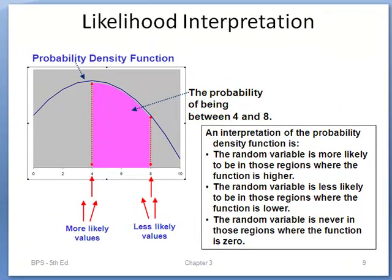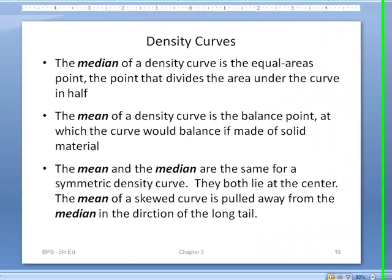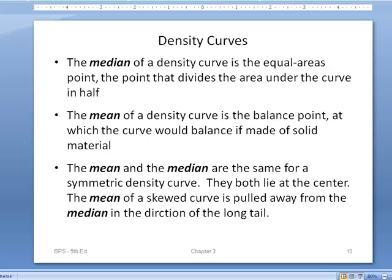Here's a likelihood interpretation. The random variable is more likely to be in the regions where the function is higher, like in the center part, the highest point. The random variable is less likely where the function is lower. The median is that place where there's equal areas to the right and left - it divides the area in half - whereas the mean is that balance point, the center of gravity.